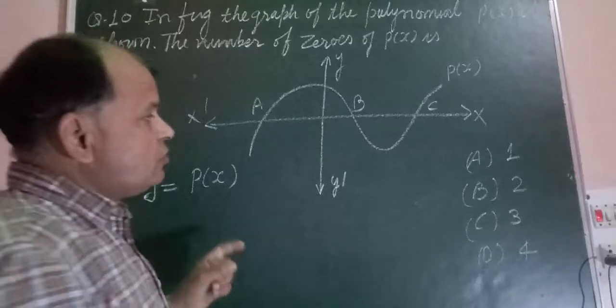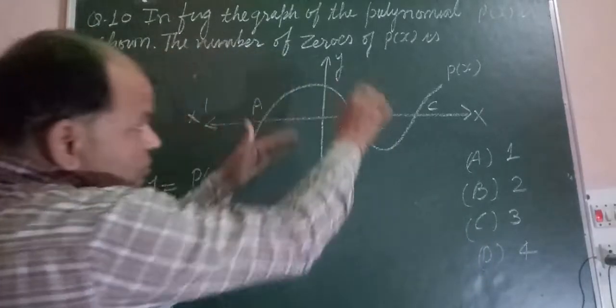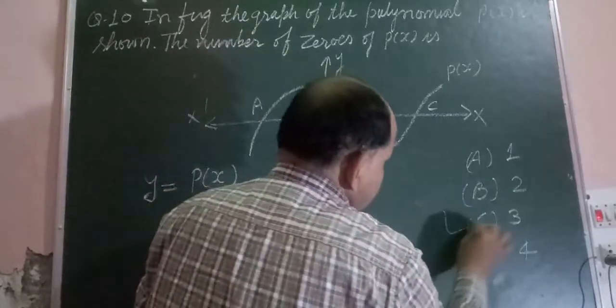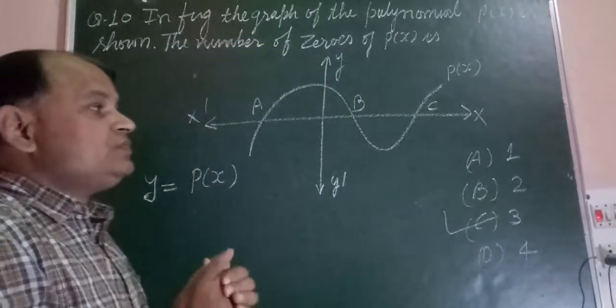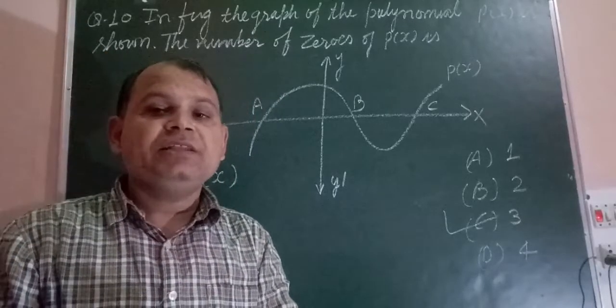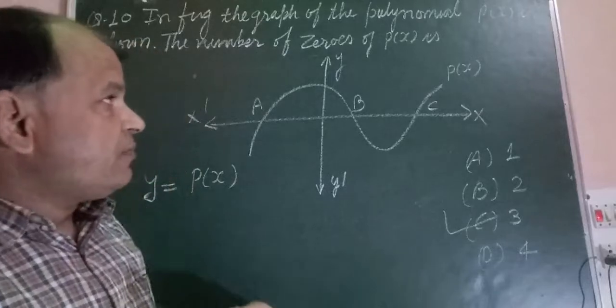So the solution of the question: the zeros of the polynomial are three, which is option C. Jitni bar x-axis ko kaatta hai, woh ke solution ya zeros kehlate hai. Or itni bar yeh x-axis ko kaatta hai.